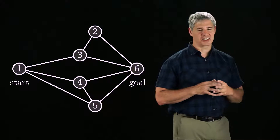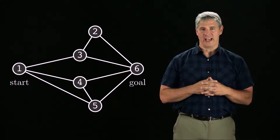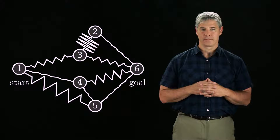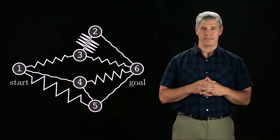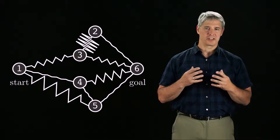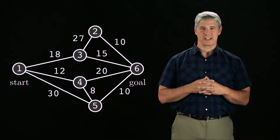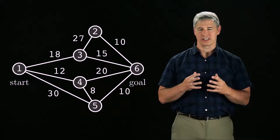It's common to represent the free C-space as a graph, where the nodes represent configurations and the edges represent free paths between the configurations. Once we have a graph, we need to search it to find a path between the start configuration and a goal configuration. The graph shown here has six nodes. Let's imagine that the edges connecting them are roads, which may be straight or winding. We'd like to find a path connecting the start and the goal that minimizes the cost — the total path length. We draw the roads as straight edges, but assign each edge a weight indicating the length or cost of the road.